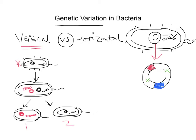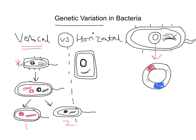Horizontal gene transmission works a little bit differently. In horizontal gene transmission, rather than passing it to subsequent generations, it passes a genetic mutation — or just genetic information — to a bacterial cell in the same generation. And that's really key to understand: it's not passing it to subsequent bacteria, but to bacteria of the same generation.